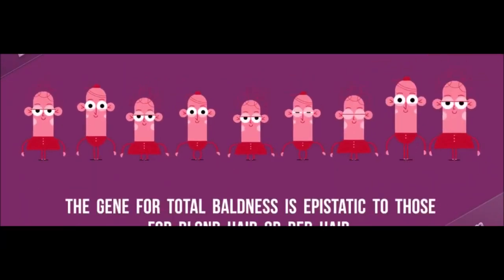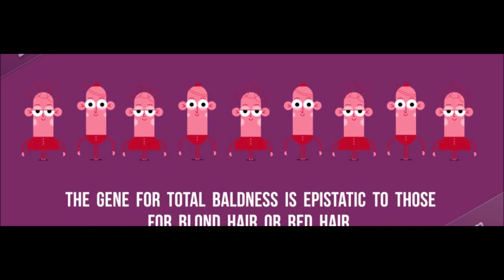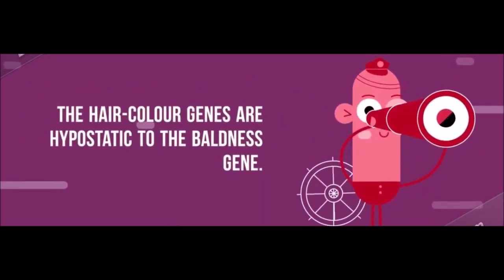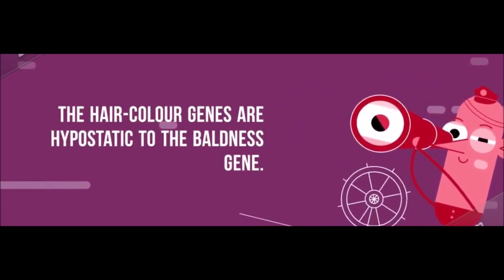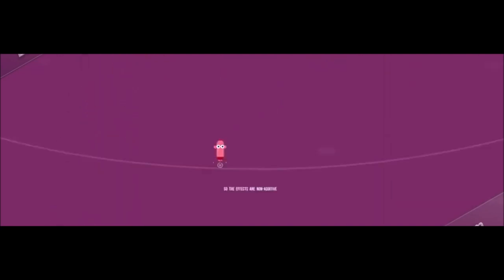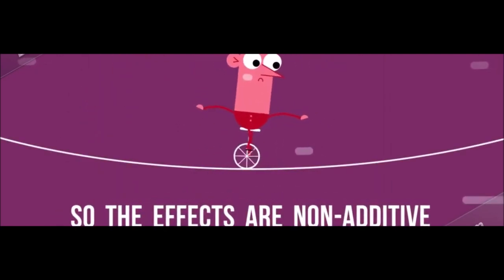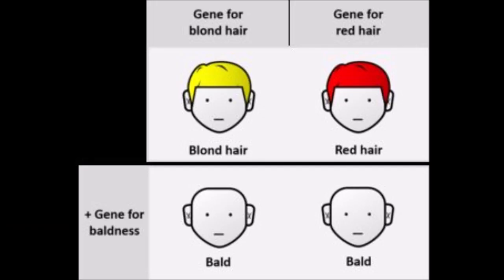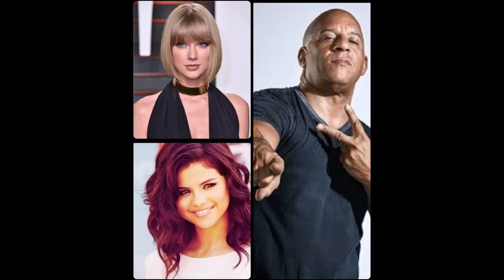Another very common example of epistasis is hair baldness. Here two biallelic genes are involved. One gene determines hair color — one allele gives red hair and the other gives blonde hair. Now, if there is a biallelic gene coding for baldness, then one allele causes the bearer to be hairy and the other causes the bearer to be bald. If the bald allele is present in the baldness loci, then this individual would be bald. And if the allele at the baldness loci is hairy, then the expression of the other gene — hair color — matters, so if the allele is blonde, the bearer has blonde hair, and if the allele is red, the bearer has red hair.